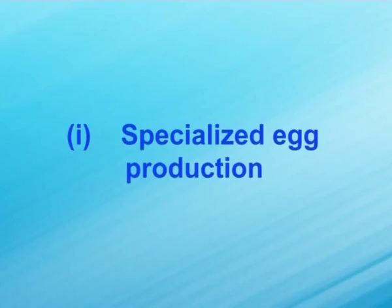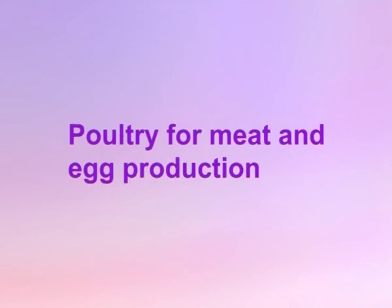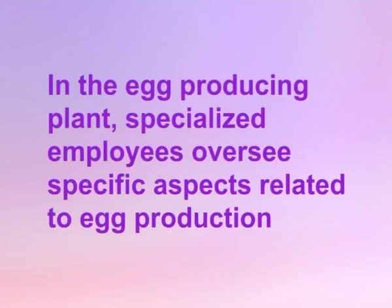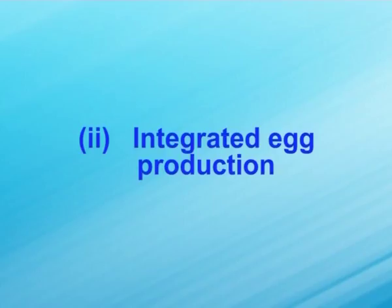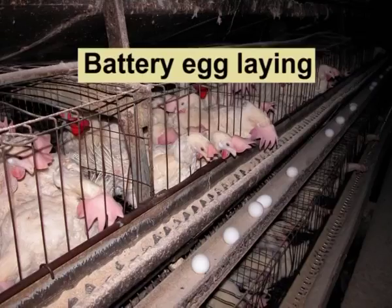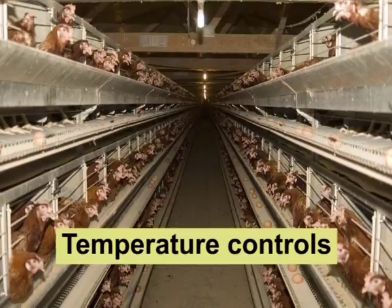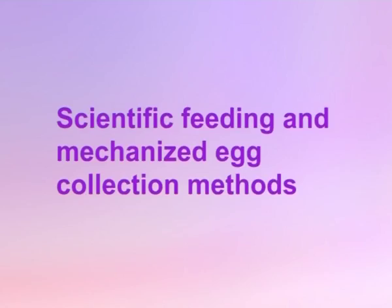Now let's talk about egg production. Egg production is basically of two types. First is the specialized egg production, which consists of separation of poultry for meat and egg production. In the egg producing plant, specialized employees oversee specific aspects related to egg production. The second type is the integrated egg production, which involves the complete mechanization and automation of the egg production cycle, including battery egg laying, temperature controls, scientific feeding and mechanized egg collection methods.